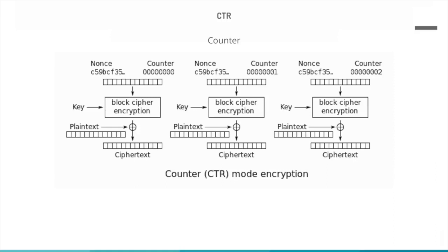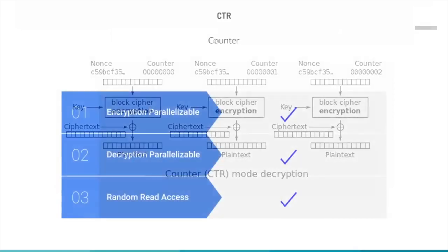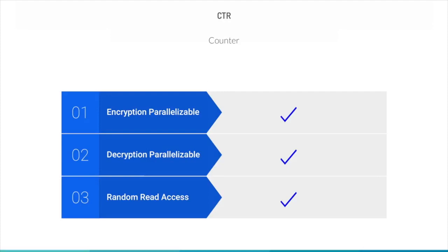In CTR mode, a counter equal to the plaintext block size is used. The only requirement is that the counter value must be different for each plaintext block — typically this counter is initialized to some value and then incremented by one for each subsequent block. For encryption, the counter is encrypted and then XORed with the plaintext to produce a ciphertext block. There is no chaining. This mode includes advantages such as hardware efficiency, software efficiency, provable security, and simplicity.